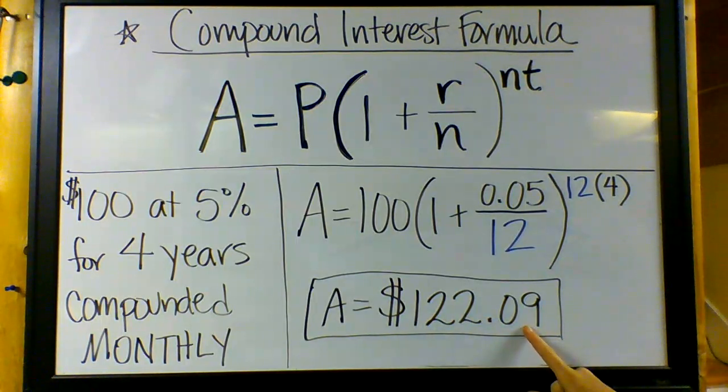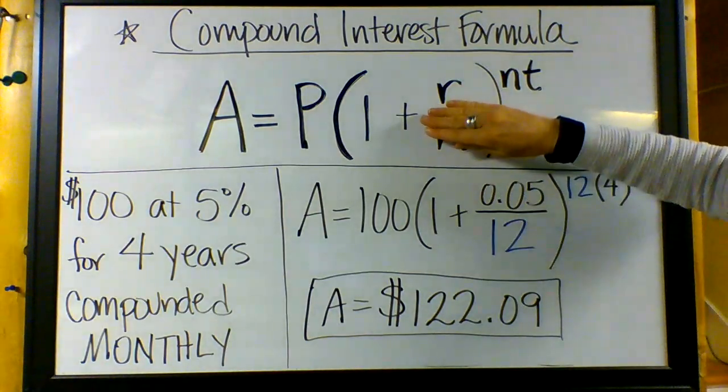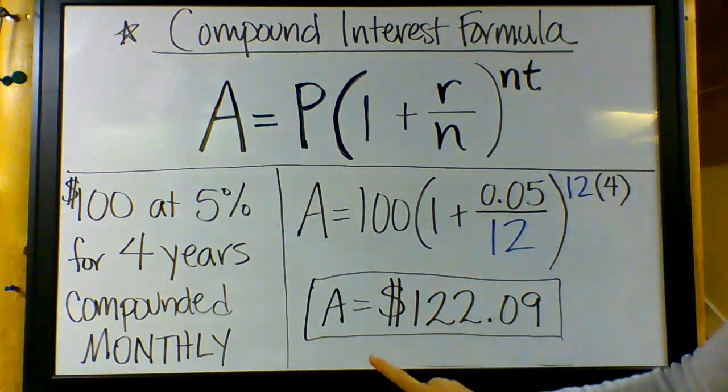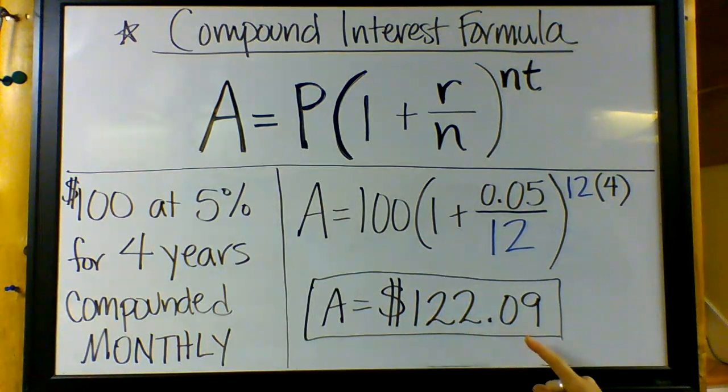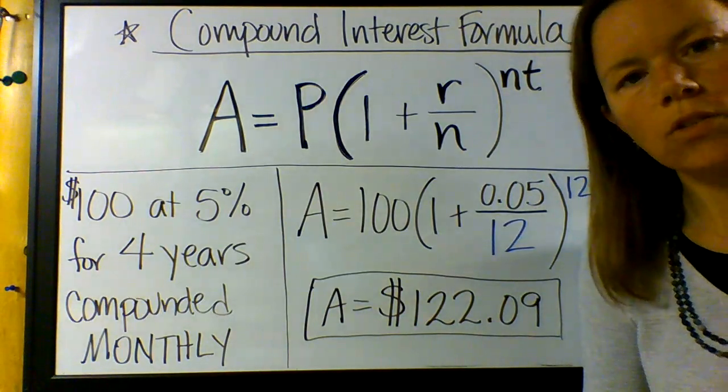Now if you recall, yesterday when we did not compound monthly - when we compounded just yearly with just the r there and just the t there - this figure was $121.55. So you can see the compounding more often actually earns more money.